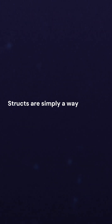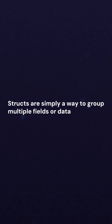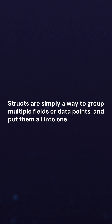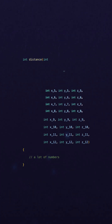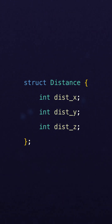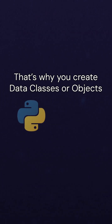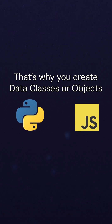Instead, structs are simply a way to group multiple fields or data points and put them all into one object, so they can be moved around and stored together. This is really useful because instead of passing 35 separate variables to a function, you can logically group them into a struct and pass them around together. This is the same reason why you often would make something like a data class in Python or just a simple object in JavaScript.